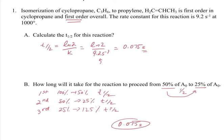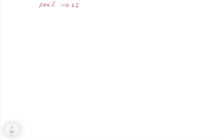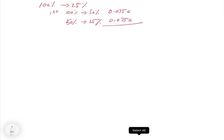Now consider going from 100% to 25% for a first-order reaction. You can only use this half-life counting approach for first order, because for other orders the concentration of A₀ affects the half-life. Here we have two half-lives: 100% → 50% (0.075 s) and 50% → 25% (0.075 s). So to go from 100% to 25%, we add them: 0.075 + 0.075 = 0.15 seconds total for two half-lives.